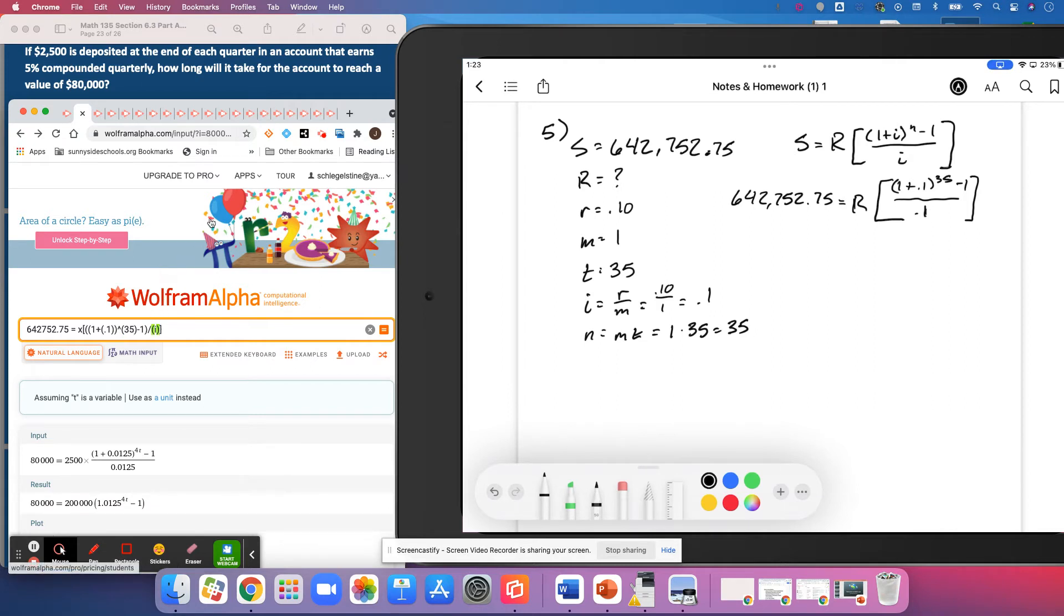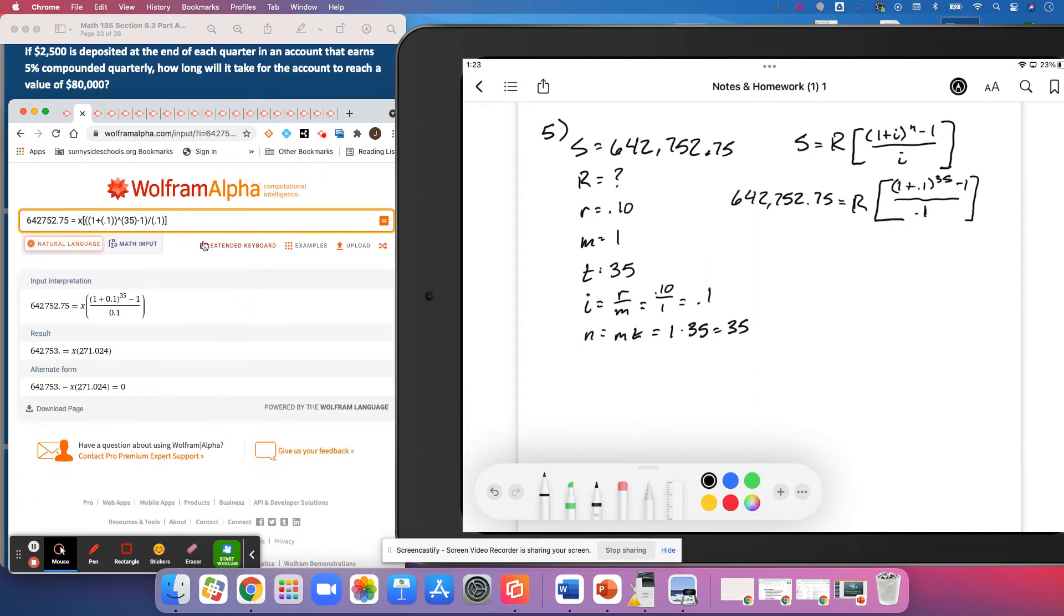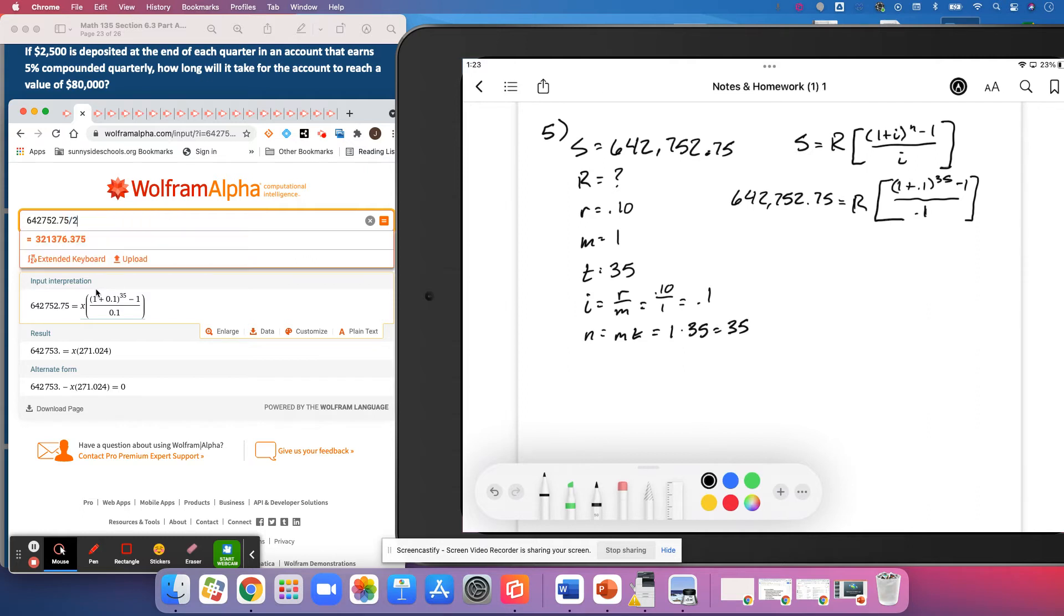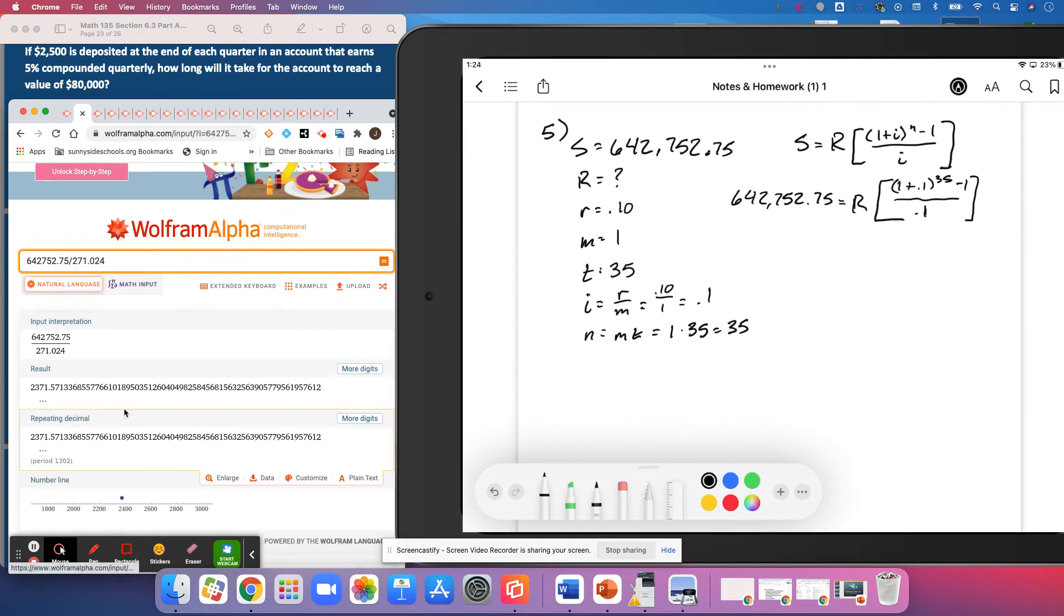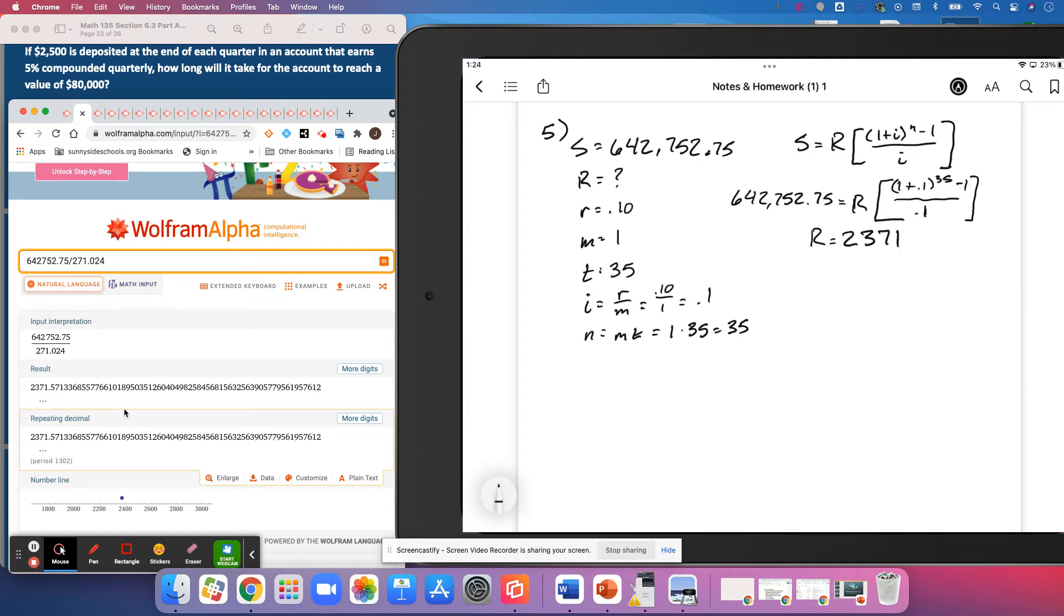N is going to be 35. And again, I is 0.1. So we can see that Wolfram is not going to completely solve that for us. I do need to divide that 642,000 and et cetera by 271,024. And so I get 2,371 dollars and 57 cents.